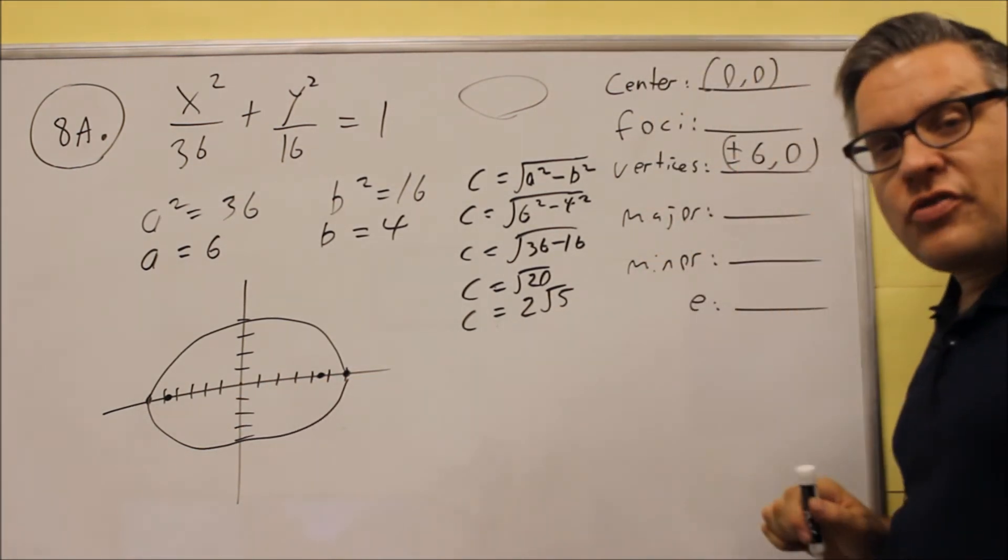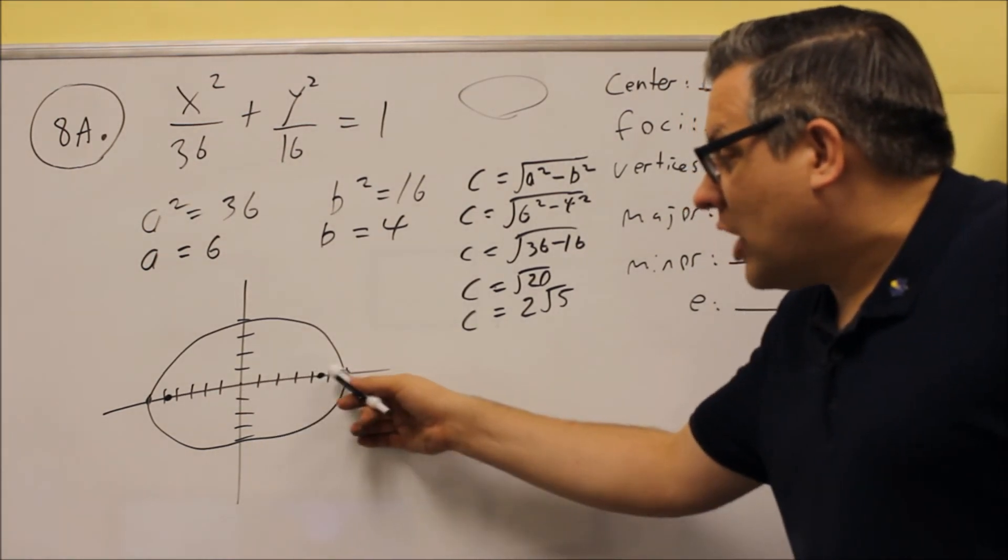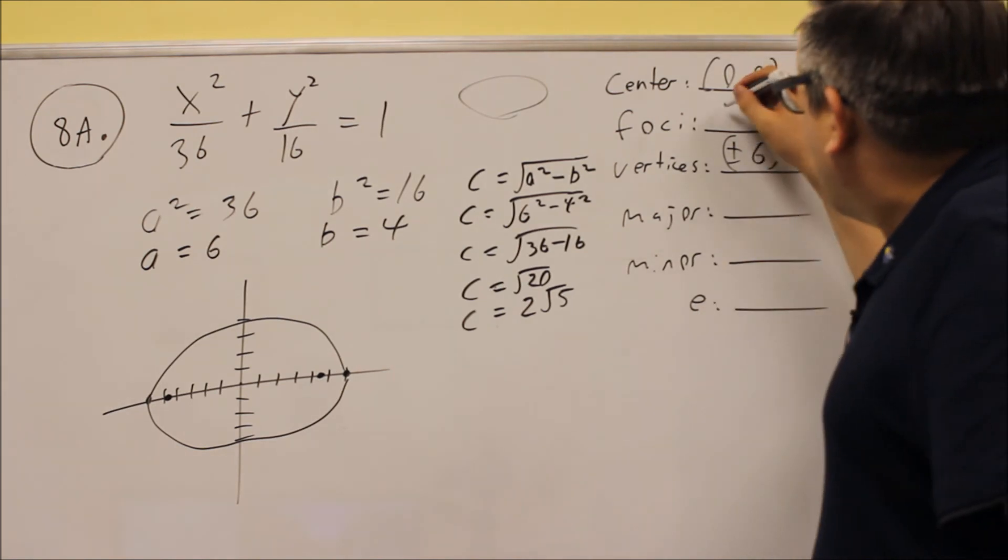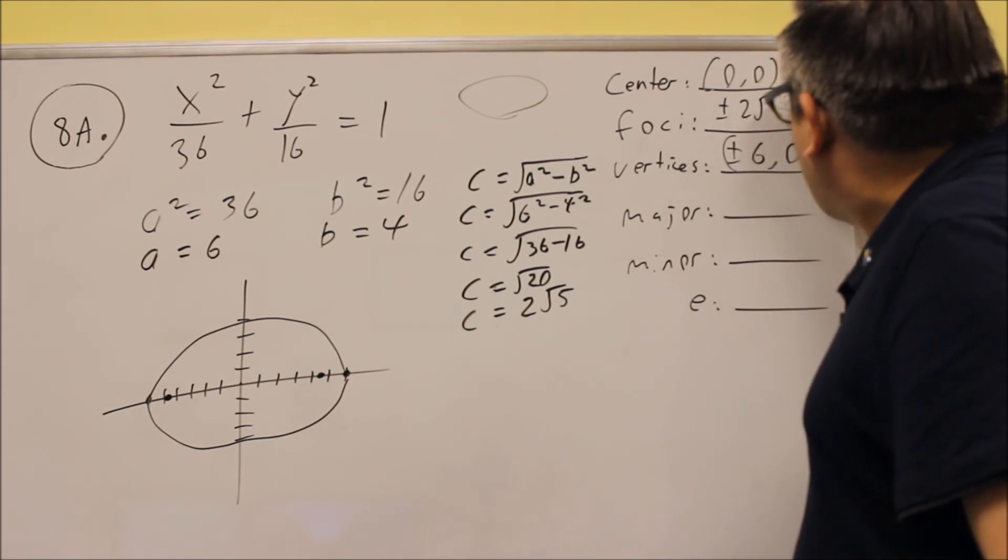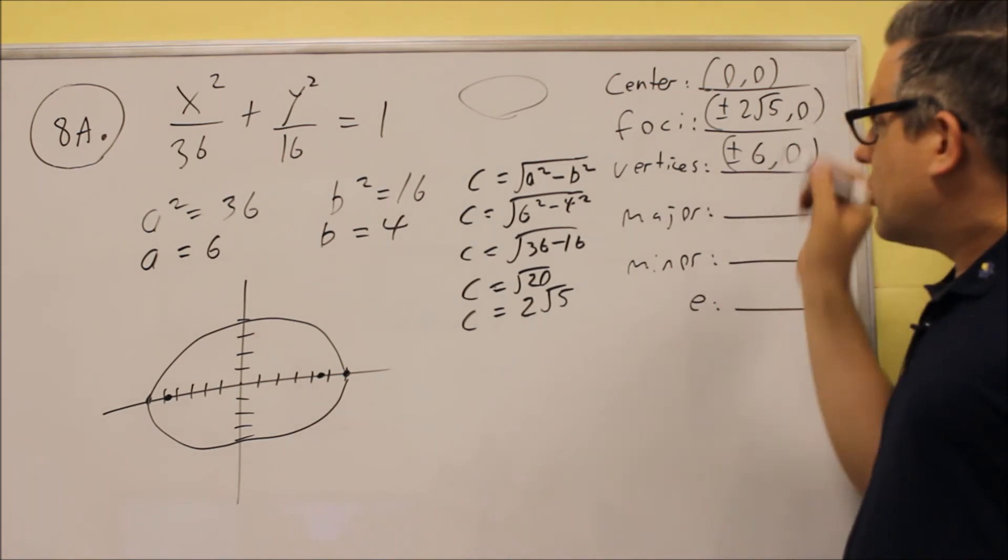Now, we have to write the coordinates for those. So what we do, from the 0, we added 2 square root of 5 and subtracted 2 square root of 5. When you write it as a coordinate, it will be plus or minus 2 square root of 5, comma, 0. And that would be the coordinates for the foci.